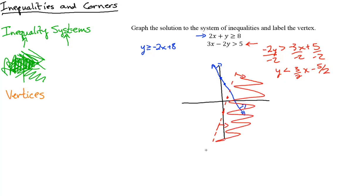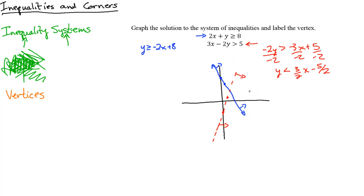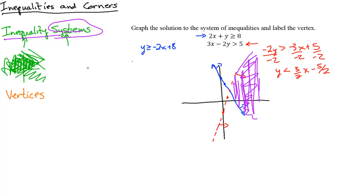The red region is below the red line. The solution to the system is everywhere that is both red and blue at the same time — the overlapping purple region. For the last part, we find the vertex. A vertex is just a corner. This region goes on forever, but there's one corner point we need to find.